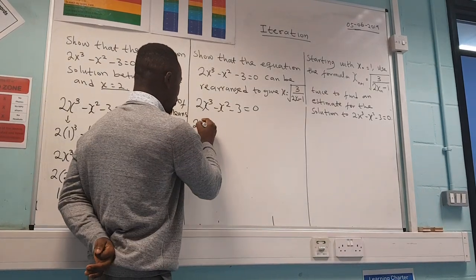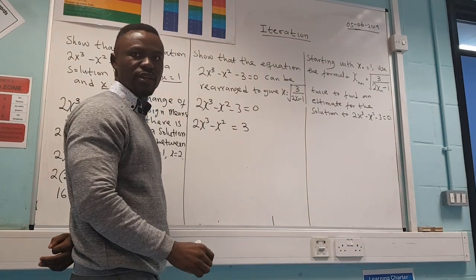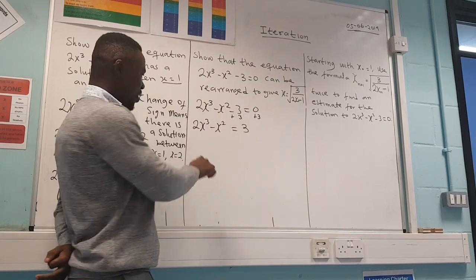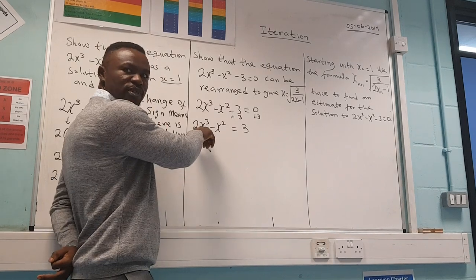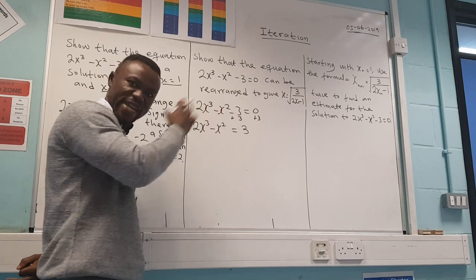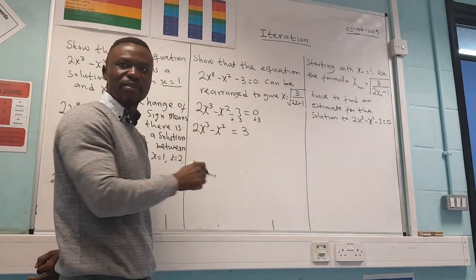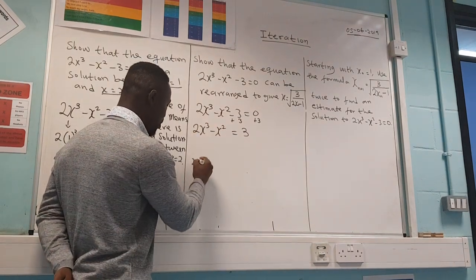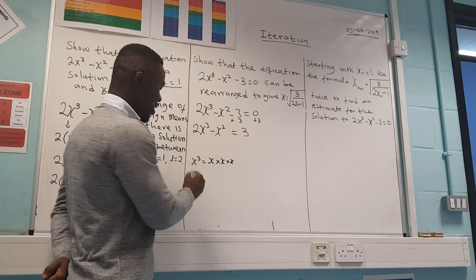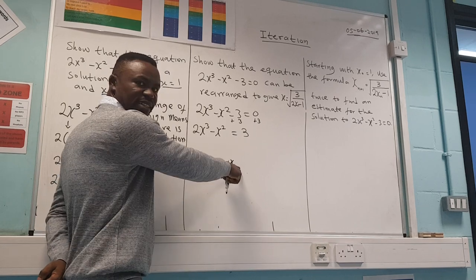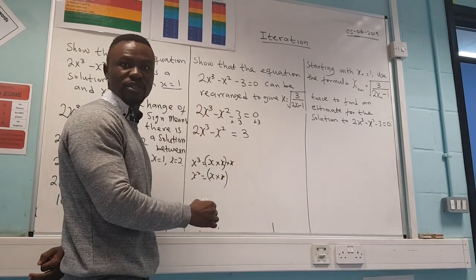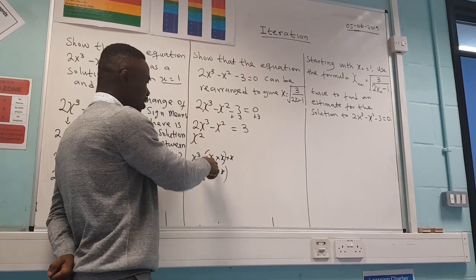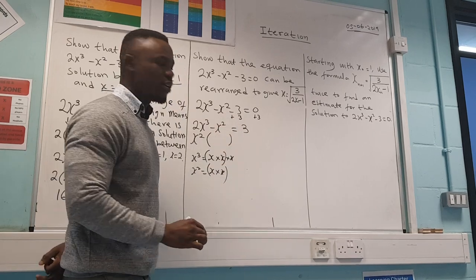Starting from 2x³ − x² − 3 = 0, I move the 3 to the other side: 2x³ − x² = 3. Now I need to bring the common letter out. This is x³ and x², so I can bring out x² as the highest common factor, because x³ = x·x·x and x² = x·x — there are two common x's I can factor out.